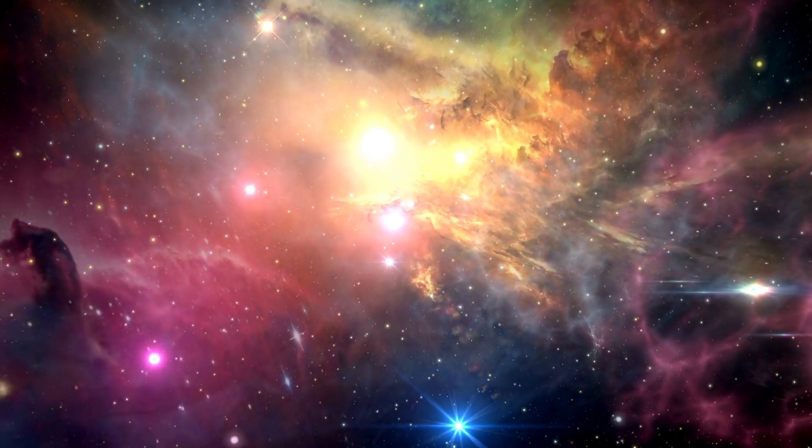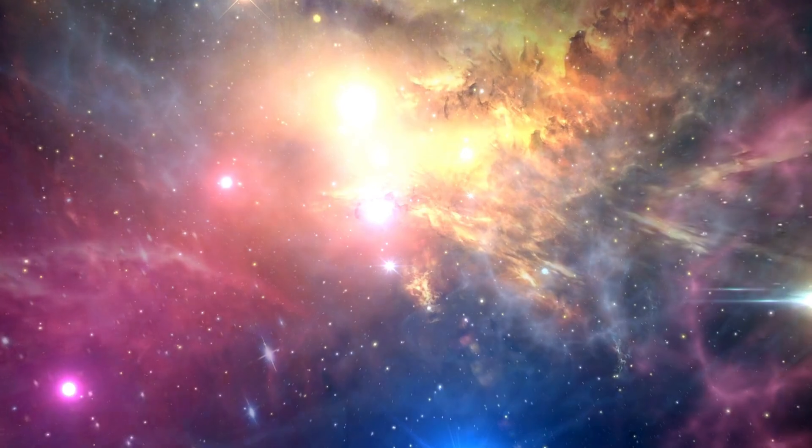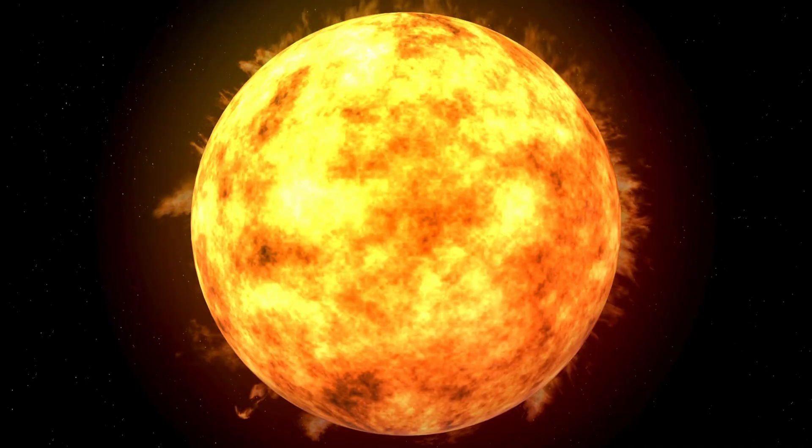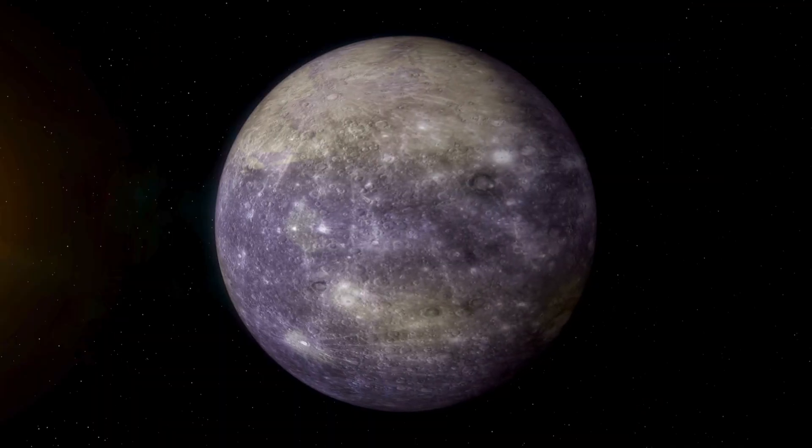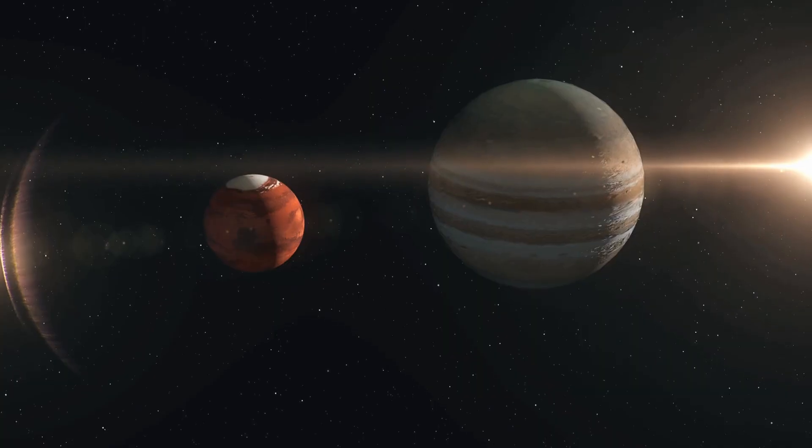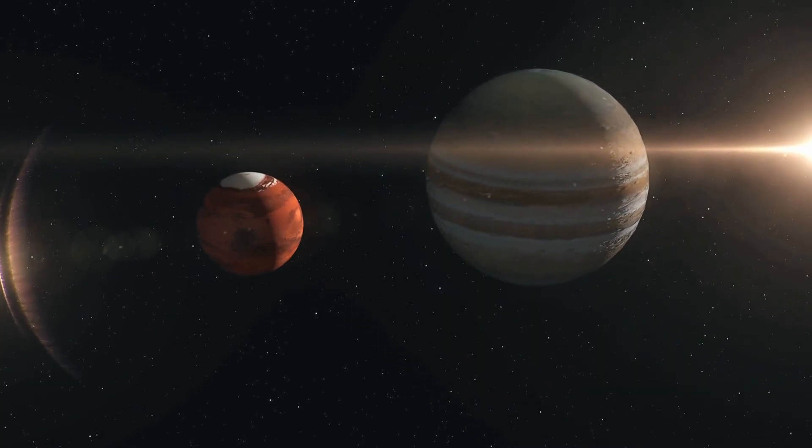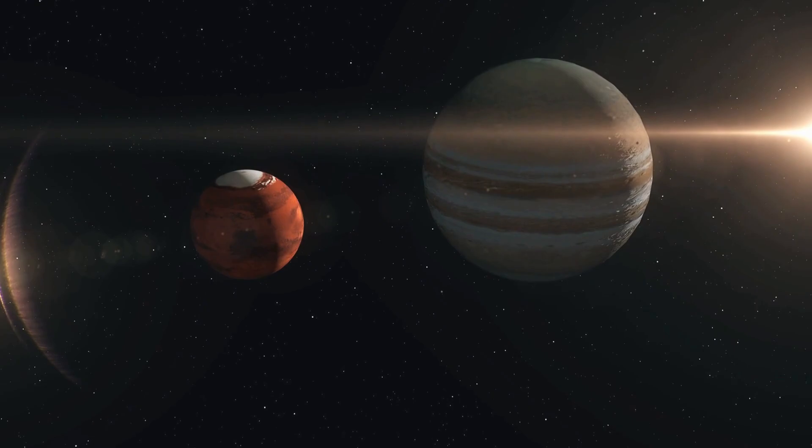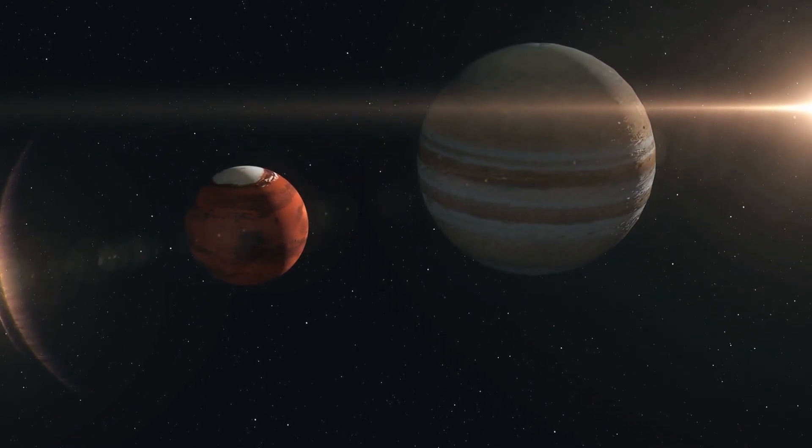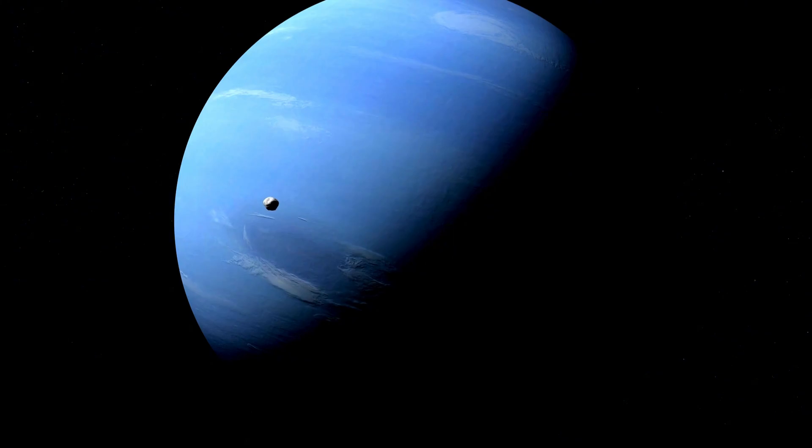To understand how vast this region is, let's imagine a journey. Starting at the sun, you pass Mercury, Venus, Earth, and Mars. Then, beyond the asteroid belt where rocky leftovers swirl between Mars and Jupiter, you enter the domain of the gas and ice giants. And then, at the edge of Neptune's orbit, the Kuiper Belt begins.